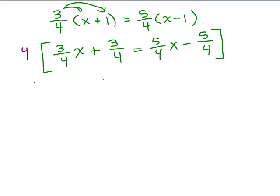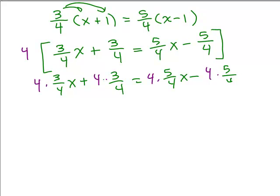And when you multiply it by each term it's going to cancel with every single denominator exactly one time. So the 4s are going to cancel. So if you want to see that it's 4 times 3 fourths x plus 4 times 3 fourths equals 4 times 5 fourths x minus 4 times 5 fourths. So many people don't need to do that step. They just do it in your head.